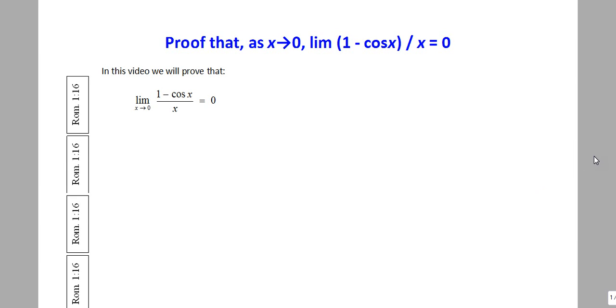Okay, now that we proved the previous result, that the limit as x tends to 0 of sine x over x is 1, let us now take a look at its partner in crime. That is to say, let's find the limit as x tends to 0 of 1 minus cos x over x, and we will show this is equal to 0.